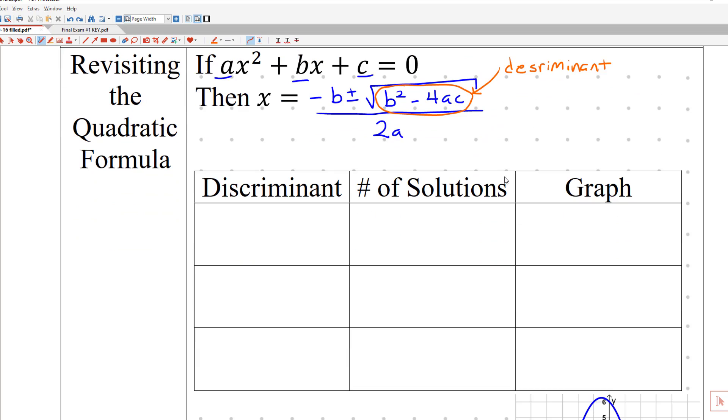So let's go ahead and define all these things. So if the discriminant is positive, if the discriminant is negative, or if the discriminant is zero, what's going to happen with the number of solutions?